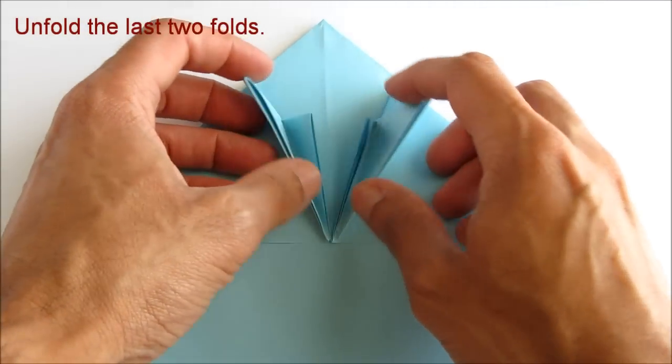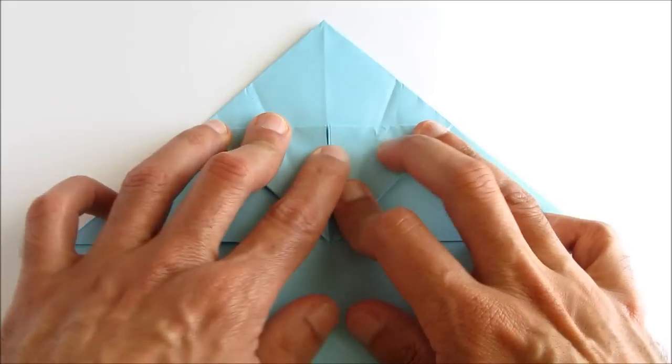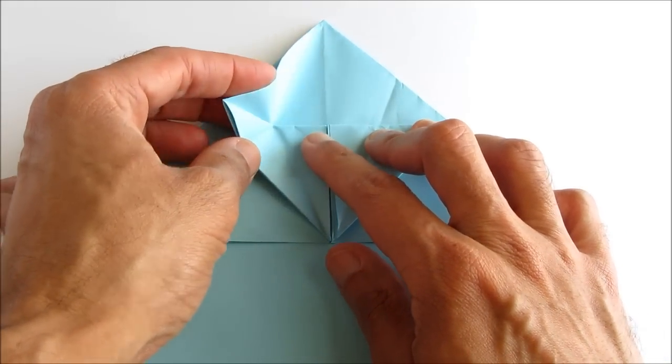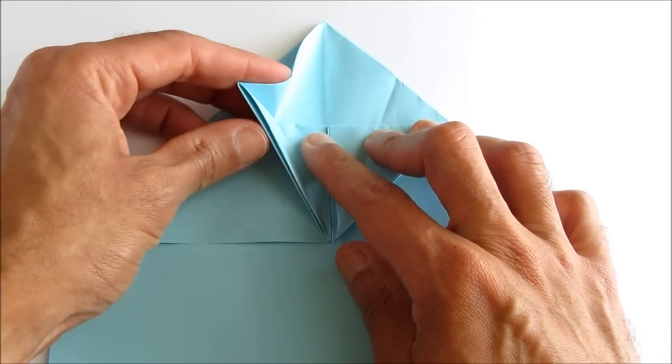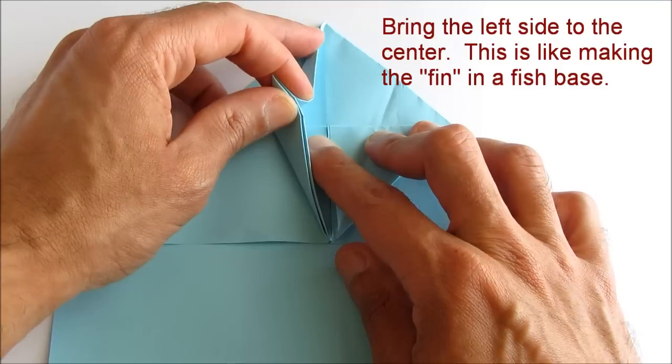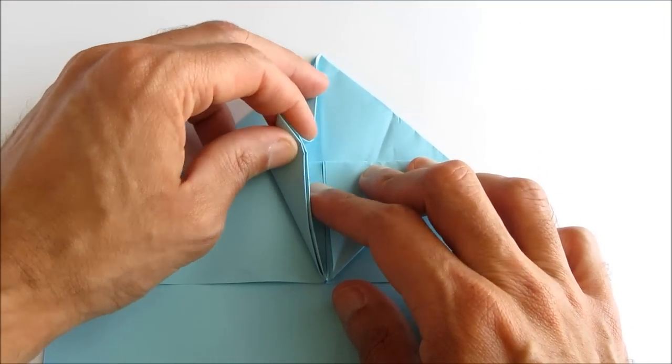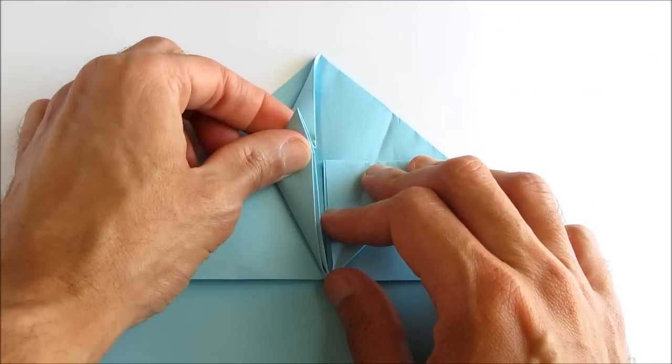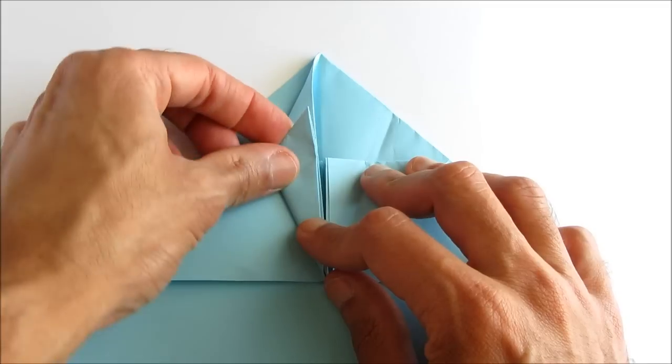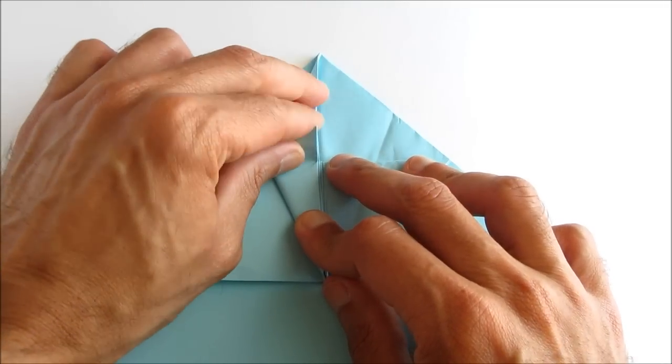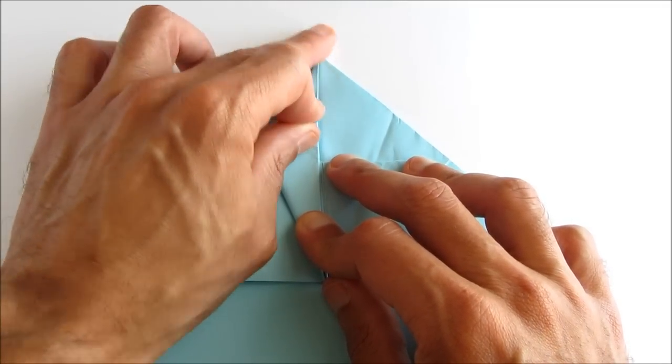So next unfold those last two folds. And we're going to do a squash fold like we're showing here. If you've ever made a fish base this should look familiar. It should look like the fin of the fish on the fish base.